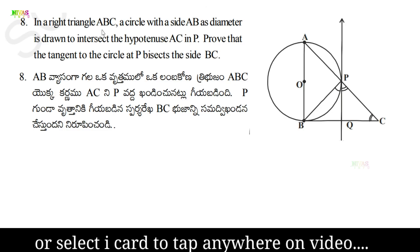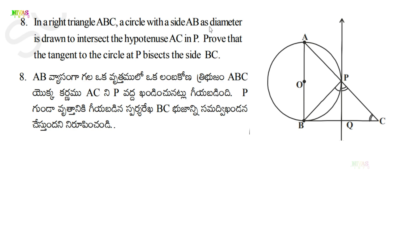Question number eight: In a right triangle ABC, a circle with side AB as diameter is drawn to intersect the hypotenuse AC at P. Prove that the tangent to the circle at P bisects side BC into two equal parts.